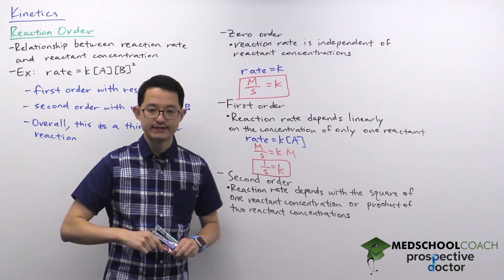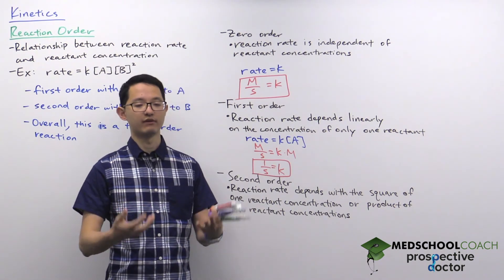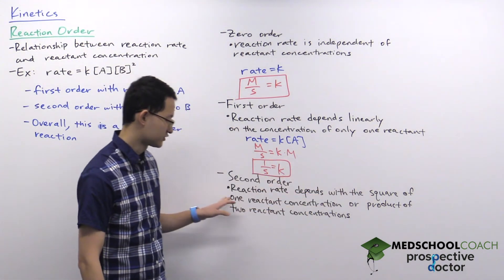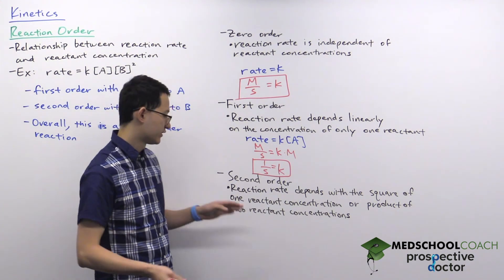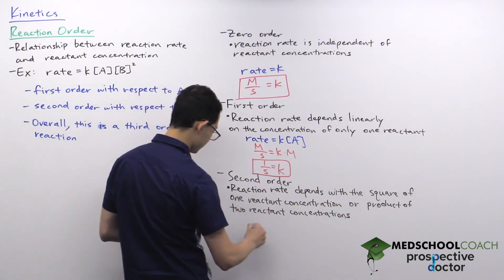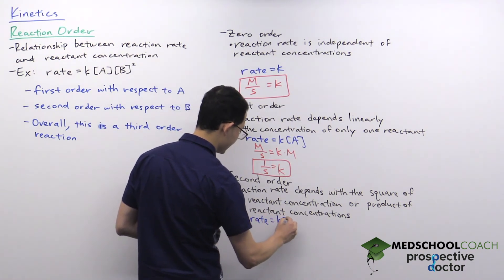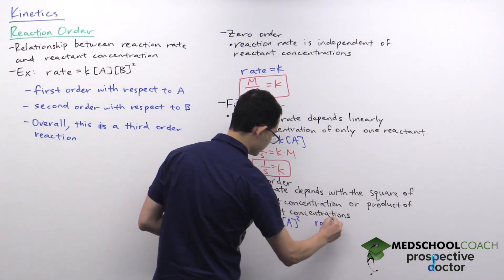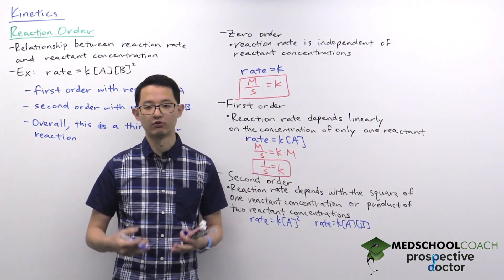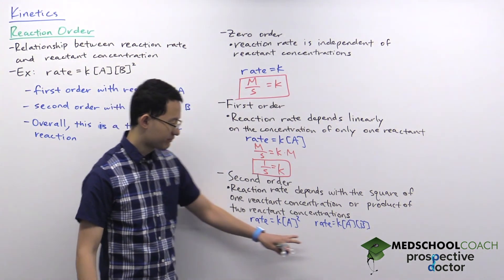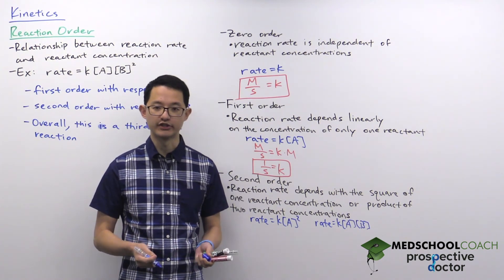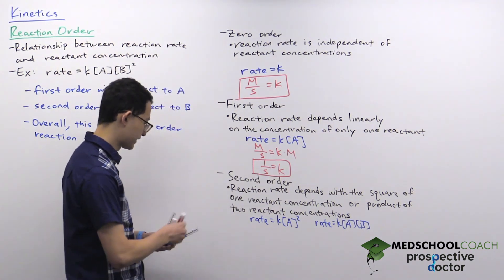For second order reactions, the sum of the reaction orders equals two. There are two ways to achieve this: the rate can depend on the square of the concentration of one reactant, written as K[A]², or more commonly, on the product of two reactant concentrations, written as rate equals K[A][B]. Both give an overall reaction order of two. A good example is an SN2 reaction, where the rate depends on both the nucleophile and electrophile concentrations.